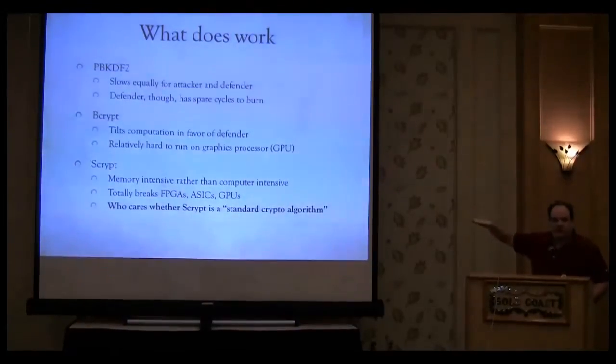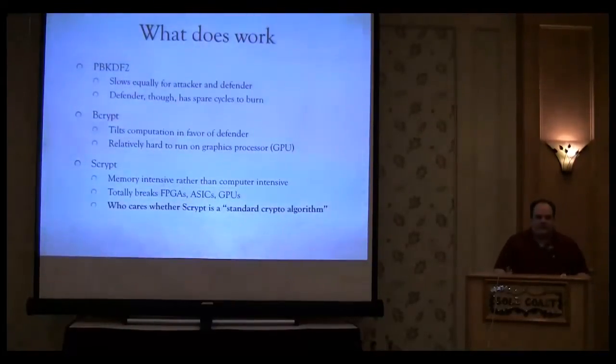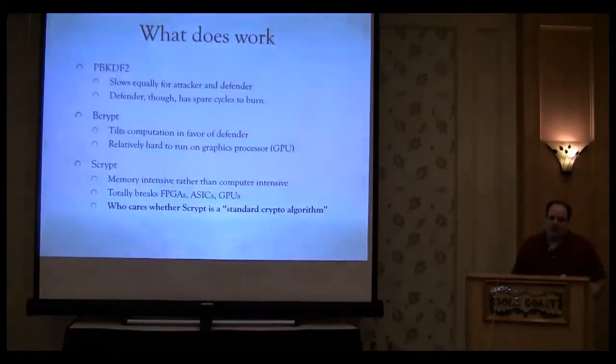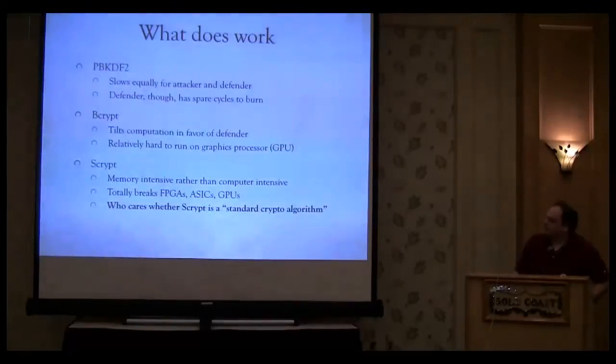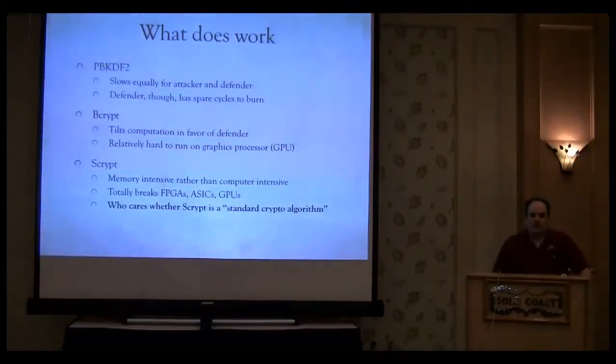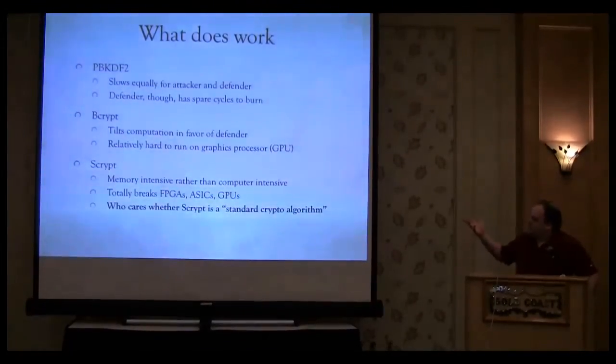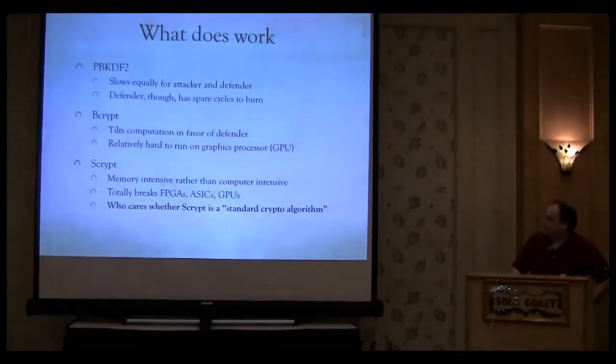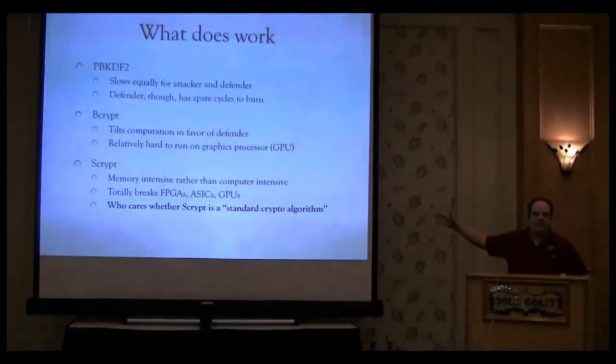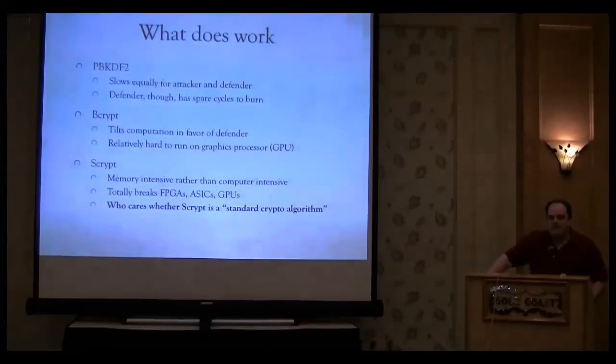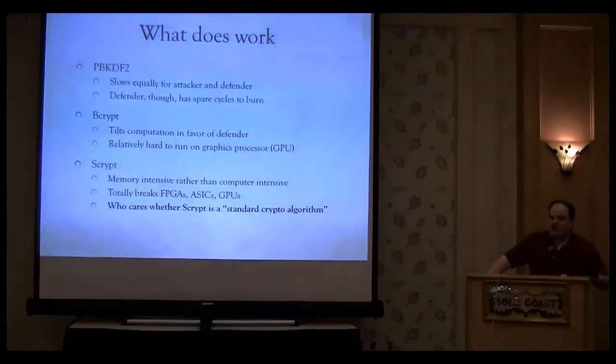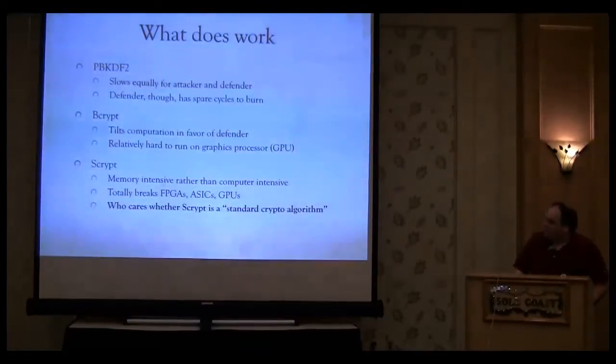So when we analyze things, our strategies, like PBKDF2, well, that's sort of equally slow for a defender or an attacker. But the defender has more cycles to burn. They've got web servers at the CPU, so that's kind of in favor of the defender. bcrypt, Twofish state is a bit in favor of defender just because it's really hard to do on GPUs and stuff. scrypt is memory-intensive rather than CPU defensive. Again, it's really hard for the typical hacker. And we don't care that scrypt hasn't been formally analyzed by cryptographers because we really don't care about the cryptographic strength of password hashes.